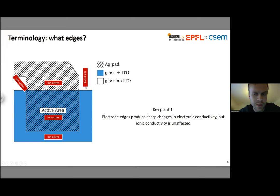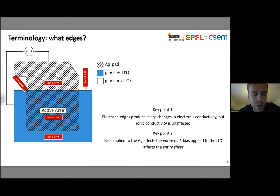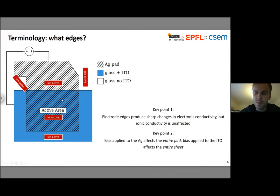We're not really thinking about the ionic component when we designate active versus inactive area. Although these electrode edges produce a very sharp change in electronic conductivity, they don't affect the ionic conductivity. Ion conduction happens primarily through the perovskite layer, so wherever you've got perovskite, you have lateral ionic conductivity. This means your entire substrate is ionically active — this distinction of active and inactive area simply doesn't apply when we're thinking about ions. As a corollary, as you apply bias to the two different electrodes, you're affecting the entire substrate — the entire silver pad is affected by bias applied there, and the entire ITO pad likewise. So we're going to drive ion migration into and out of these areas as we apply bias, and we have to stop thinking that bias only affects the active area when ions are in the picture.